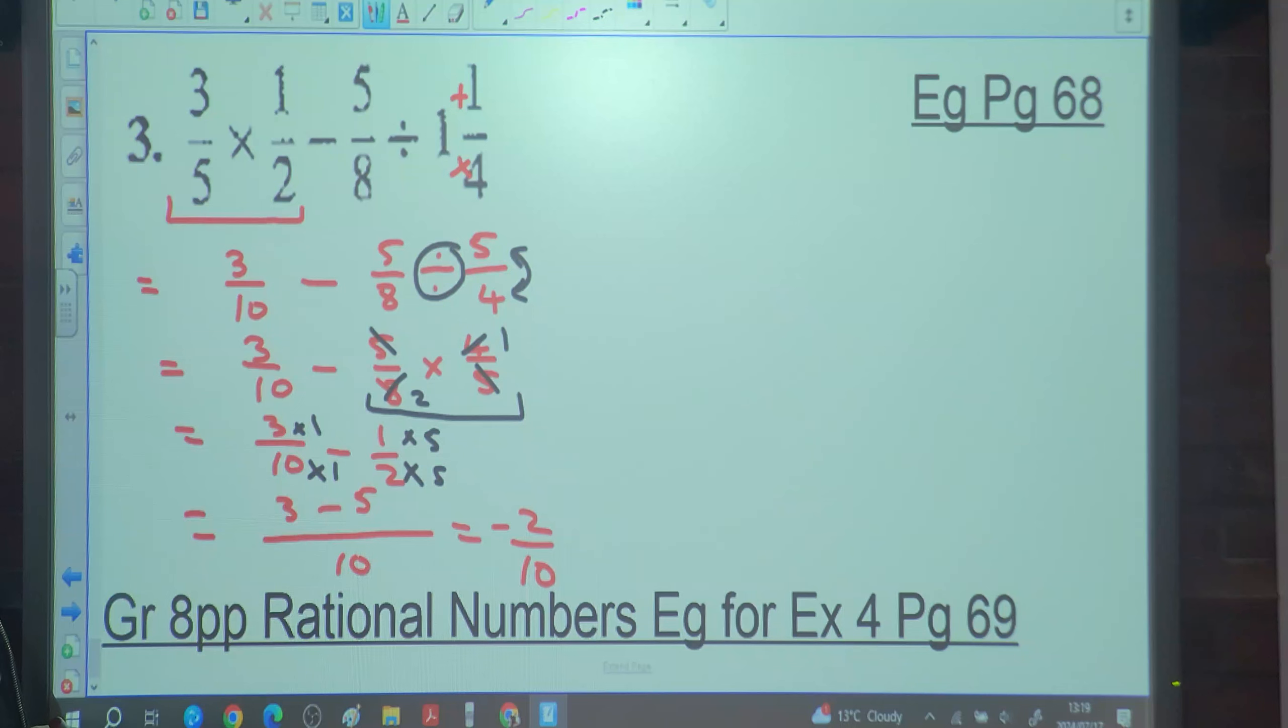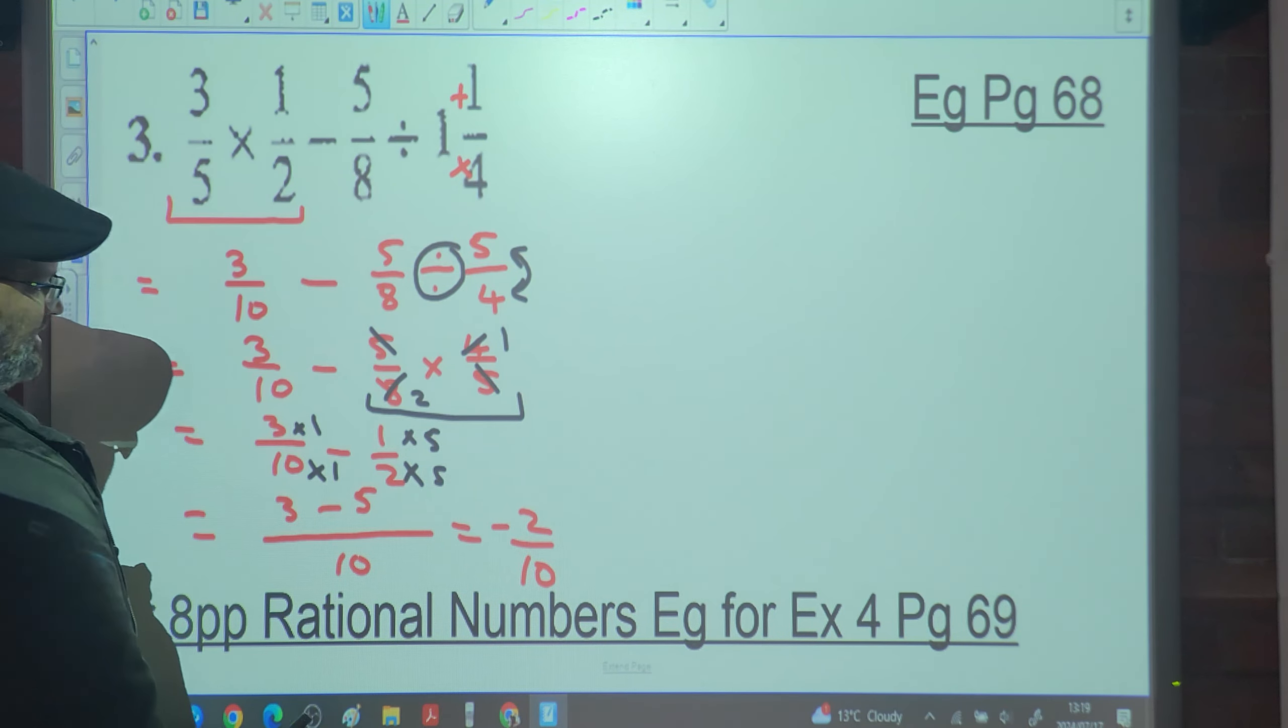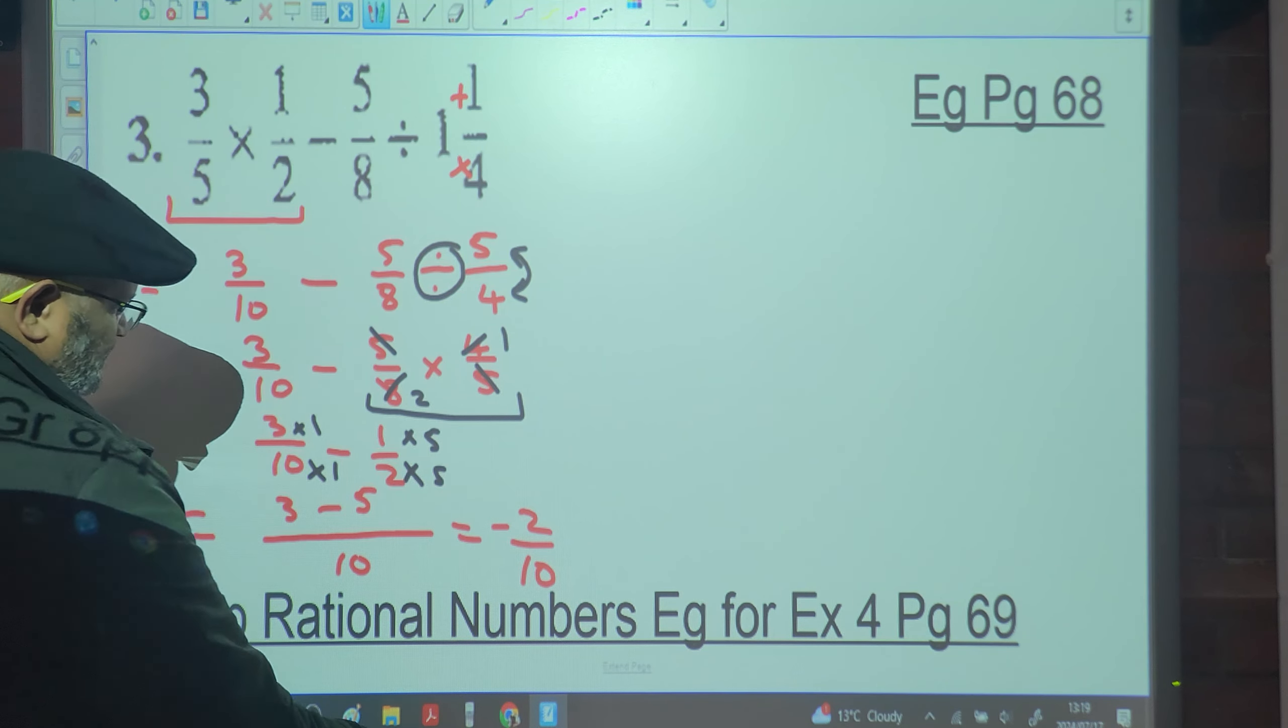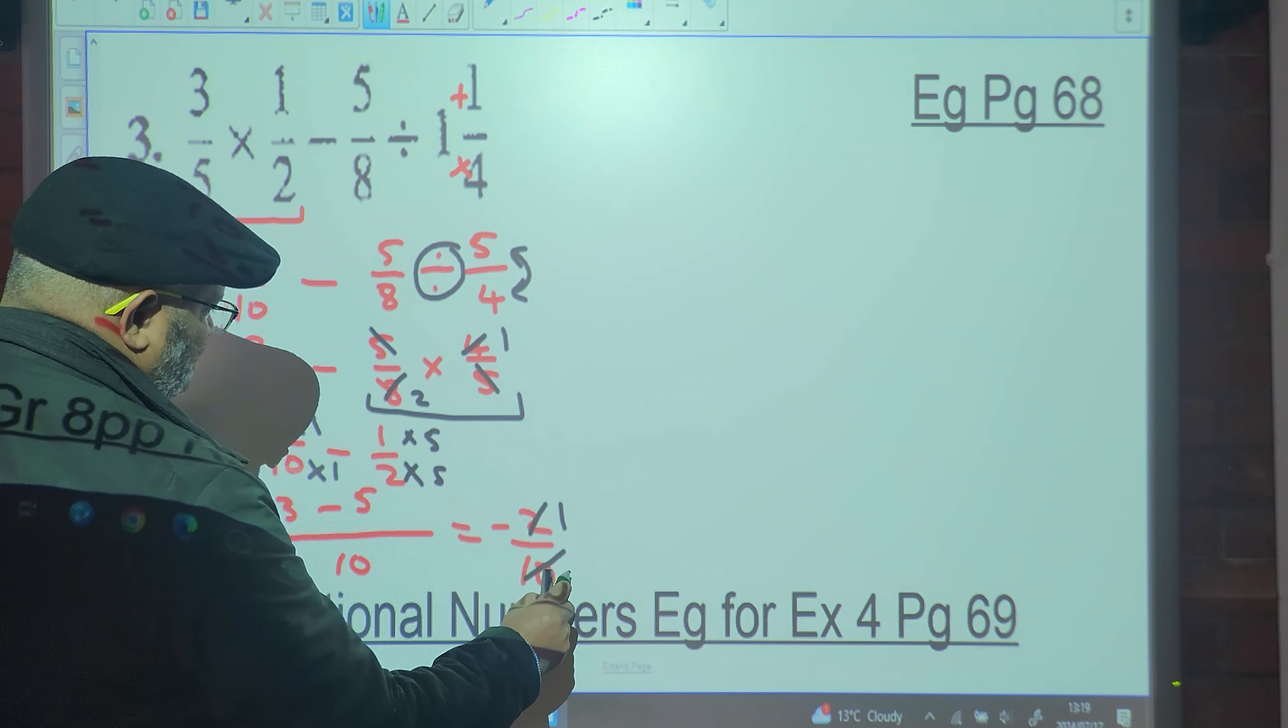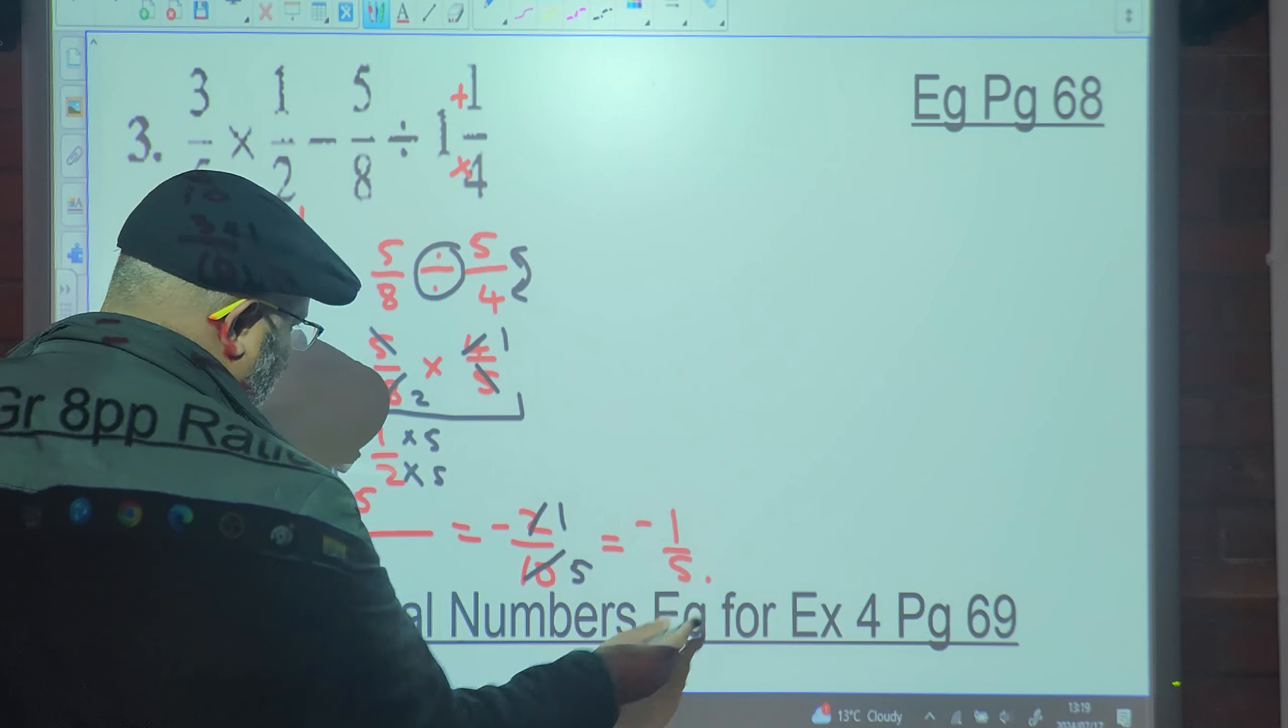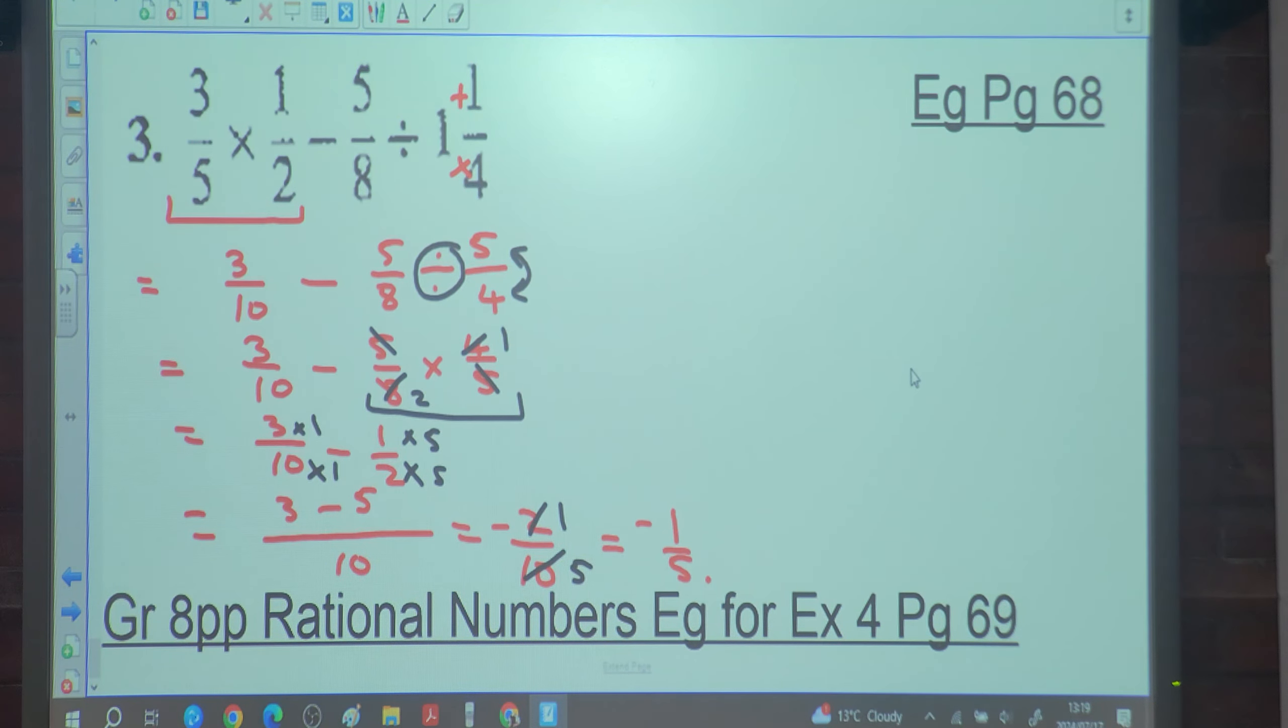Do we stop there? No. What number goes into two and into ten without a remainder? Two. Two goes into two once. Two goes into ten five times. The answer is negative one fifth.